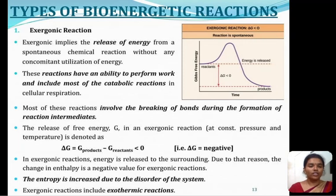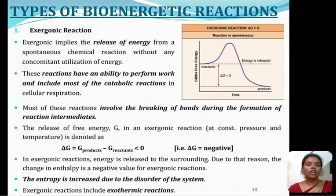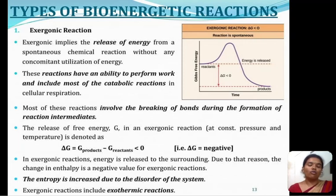Next we will see about the different types of bioenergetic reactions — exergonic reactions and endergonic reactions. Exergonic reactions imply the release of energy from spontaneous chemical reactions without any requirement of energy input. This reaction has an ability to perform work and involves most of the catabolic reactions. Most of these reactions involve the breaking of bonds during the formation of reaction intermediates. This is denoted by the equation: delta G equals G products minus G reactants. Delta G is always negative in exergonic reactions. Energy is released to the surroundings, and the change in enthalpy is a negative value for exergonic reactions.